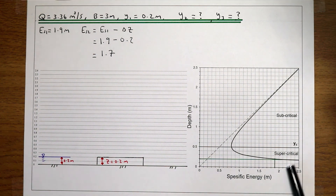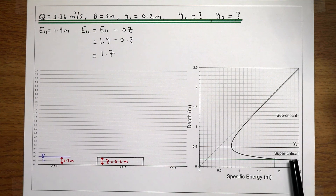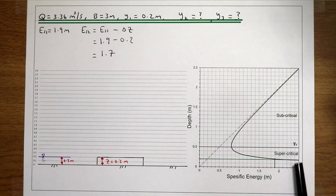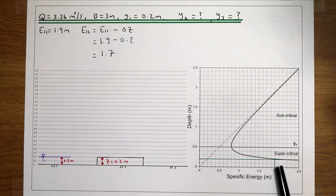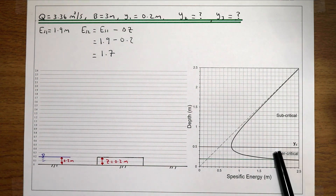Our new specific energy level is 1.7 metres, and we can think about what that means on our graph. The first thing to note is that our initial flow depth of 0.2 metres is supercritical. In all of the previous examples the initial flow depth was subcritical, but in this example it is supercritical — because the flow depth is below the critical flow depth of approximately 0.5 metres.